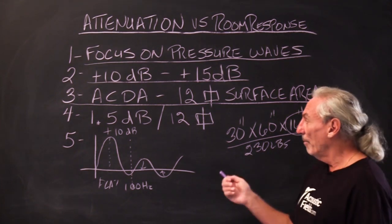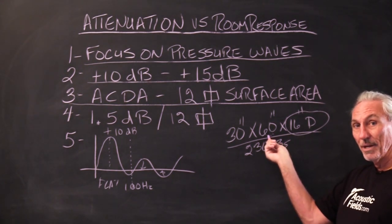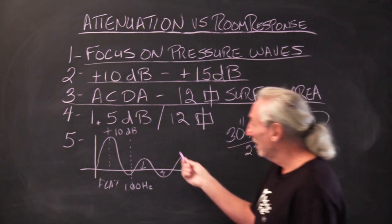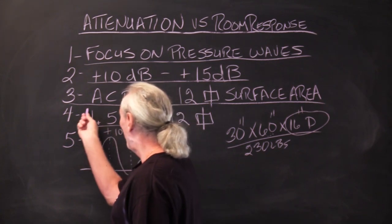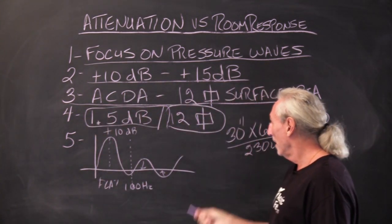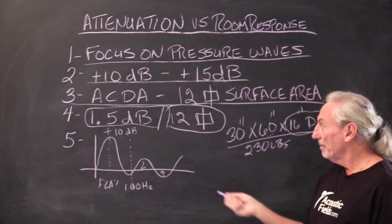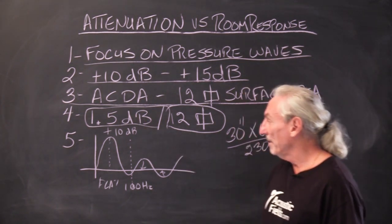So now what do we get with that 12 square feet? Because that's what that is. That measure equates to 12 square feet. We get 1.5 dB of attenuation for every 12 square feet. So every one of our ACDA units, whether it's the 10 or the 12, gets 1.5 dB of attenuation.